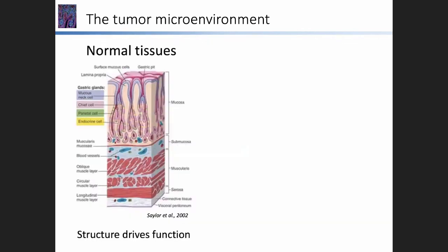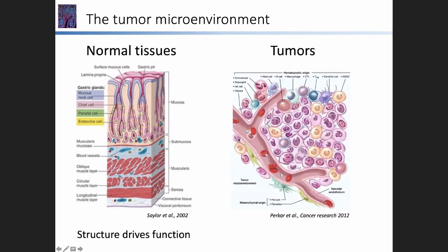When we think about normal tissues, we often think about the fact that the structure of these different cell types within the tissue really drives the function of the tissue. But when we imagine tumors, we often think about them as these disorganized balls of cells. What I would like to suggest today is that also in tumors, we can find organization of all these different cell types that drives their function.